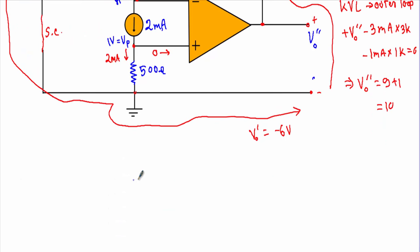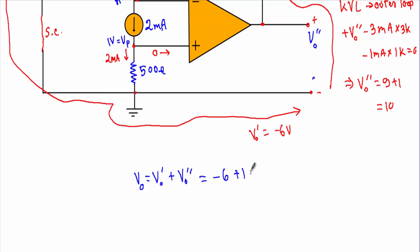Having applied superposition theorem, the total output voltage VO is the algebraic sum: VO prime plus VO double prime equals minus 6 plus 10 equals 4 volts. That's it. Thank you.